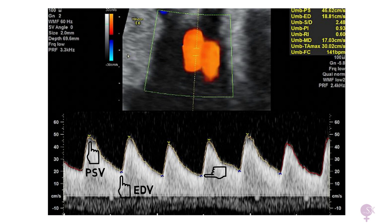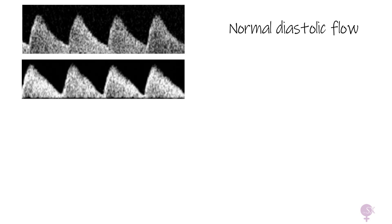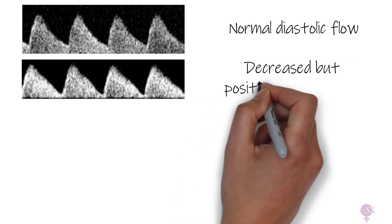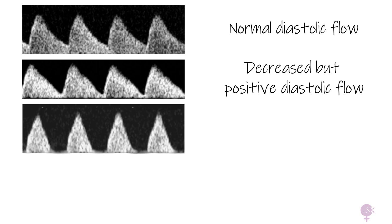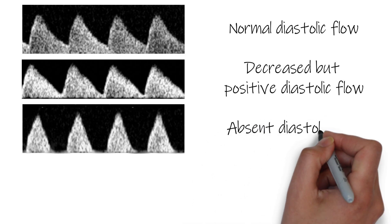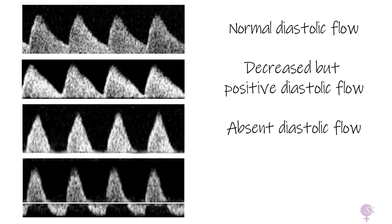If the diastolic flow velocity starts decreasing, this is a sign of increased resistance to flow and placental insufficiency. Looking at some different examples: first, we have our normal waveform where the end diastolic velocity does not reach zero. In the next example, the EDV is slower — this represents decreased but still positive diastolic flow. Next, the EDV has gone down to zero, giving us absent diastolic flow. Even worse, the EDV is going below the line, giving us reversed diastolic flow — a severe sign of placental insufficiency that will require a plan for urgent delivery.